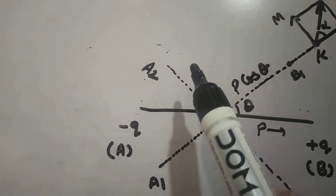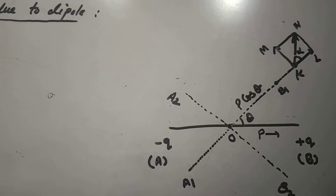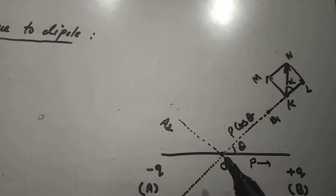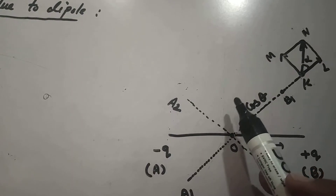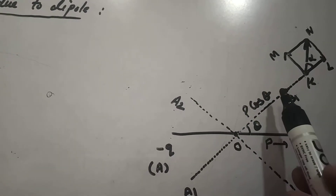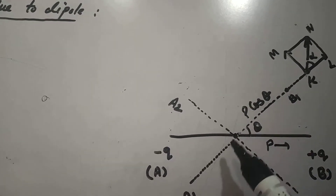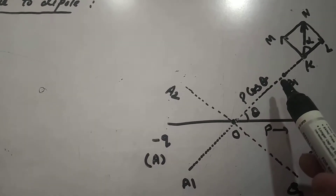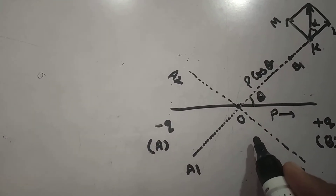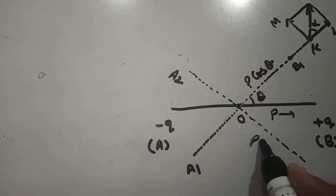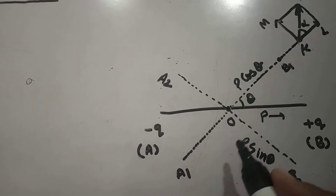You can see that the P cos theta component is along A1B1 and the P sin theta component is along A2B2.